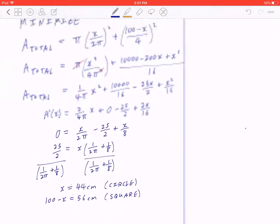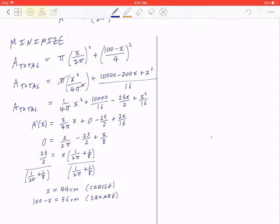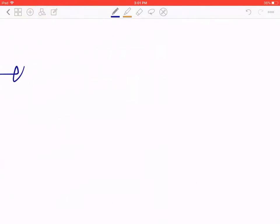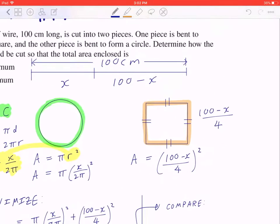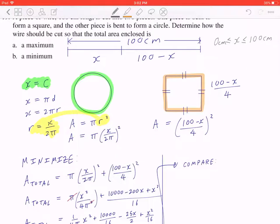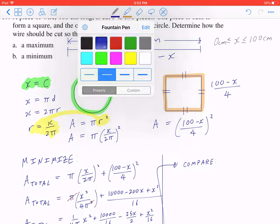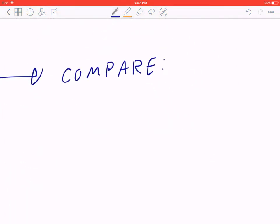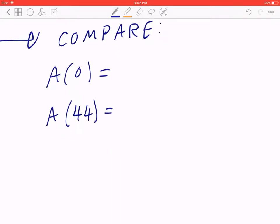Now, to find out if it's a max or min, what you really have to do is compare them. So by comparing the cases, you can find both the maximum and the minimum. So, what you're really comparing is the y value, or in this context, the area. Now remember, this wire could go anywhere from 0 up to 100 centimeters. So as you're comparing this, there are three numbers you're focusing on. You want to find the area when x is going to be 0. You want to find the area when x is 44. You want to find the area when x is 100.